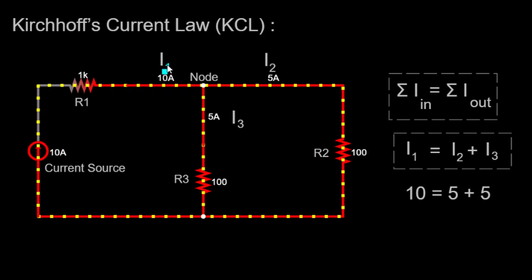In our circuit, this means that the current I1 from the 10-ampere source will split into two separate currents, I2 flowing through R2 and I3 flowing through R3.